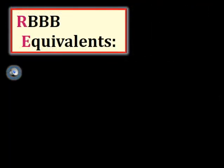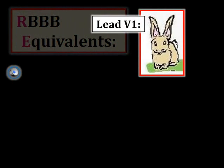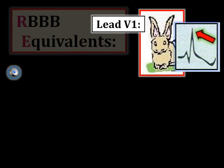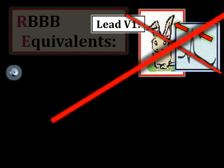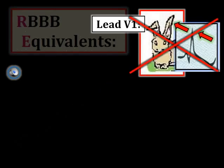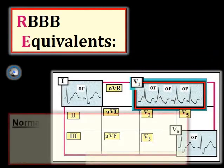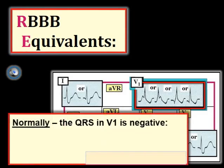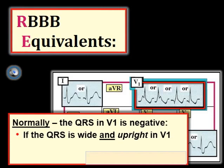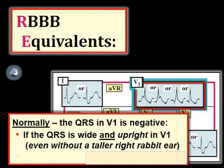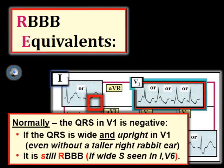The last point relates to right bundle branch block equivalents. Up until now, we have only looked at right bundle branch block patterns with a neat RSR prime with taller right rabbit ear in lead V1. It turns out you do not always have to have this characteristic pattern. Instead, you may have what we call a right bundle branch block equivalent pattern — any of the complexes shown in lead V1 of the schematic tracing. Normally the QRS is predominantly negative in lead V1 because the depolarization vector is traveling away from this right-sided lead on its way to the left ventricle. If you see any of these upright patterns in V1 with a supraventricular rhythm and a wide QRS, you may still have complete right bundle branch block if there is also a wide terminal S wave in left-sided leads 1 and V6.